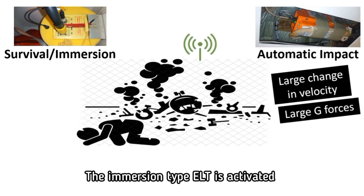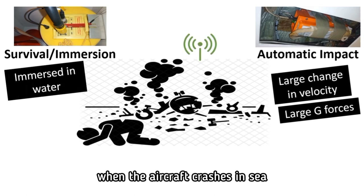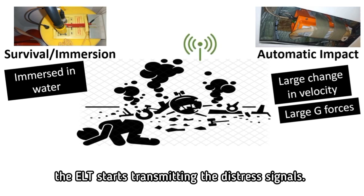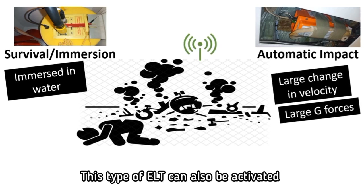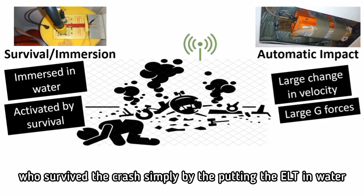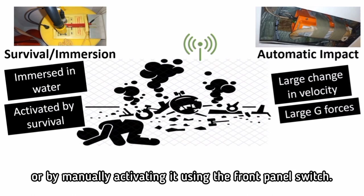The emergent type ELT is activated when the aircraft crashes in sea and the ELT body is dipped in water. The presence of water completes the activation circuit and the ELT starts transmitting the distress signals. This type of ELT can also be activated by any person, either crew or passenger who survived the crash, simply by putting the ELT in water or by manually activating it using the front panel switch.